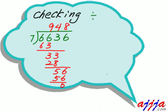Now, how we check? That's right. We use the multiplication. 948. This was quotient, right? So, we call this one quotient. So, quotient times this divisor, which is 7. We just multiply this one. That's it.